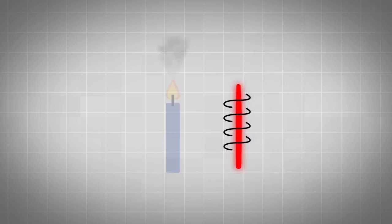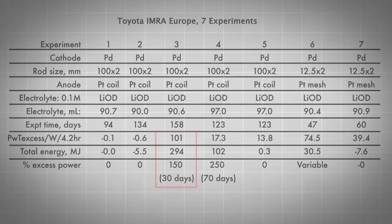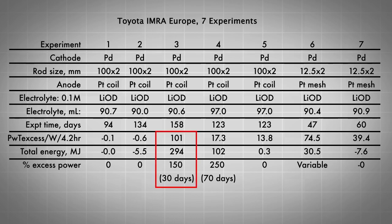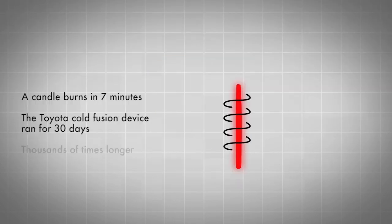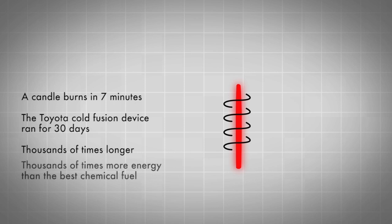The core of the Toyota reactor was about the size of a birthday cake candle. A candle burning at 100 watts uses up all of the fuel in 7 minutes, whereas one of the Toyota devices ran at 100 watts continuously for 30 days. That's thousands of times longer than the candle. It produced thousands of times more energy than the best chemical fuel.